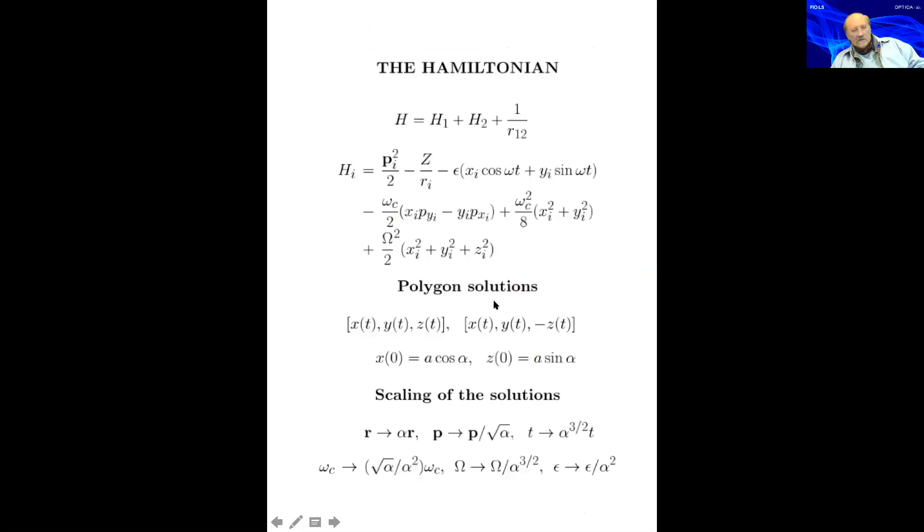This is for single electron. This is the Hamiltonian with the time-dependent field, the magnetic field. Additionally, you can consider artificial atoms in quantum dots. This is the harmonic frequency of the quantum dot. You will find out that the solutions are scaled. You have scaling properties that if you find one, you generate whole class with the parameter alpha, the scaling parameter that you get whole class of solutions.